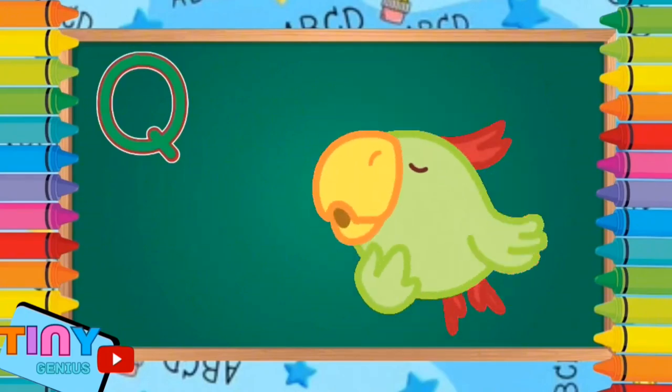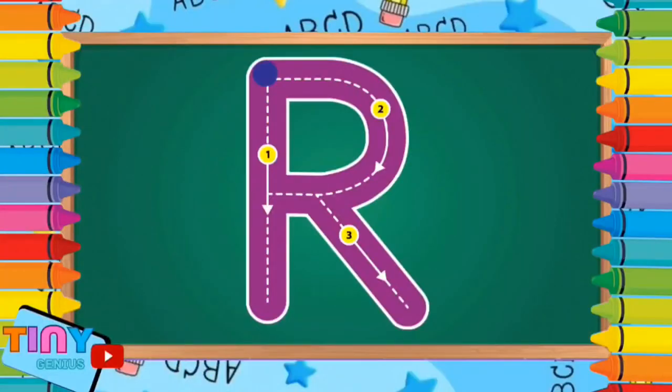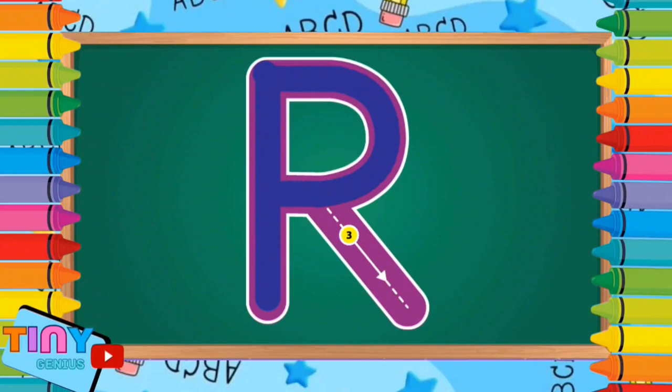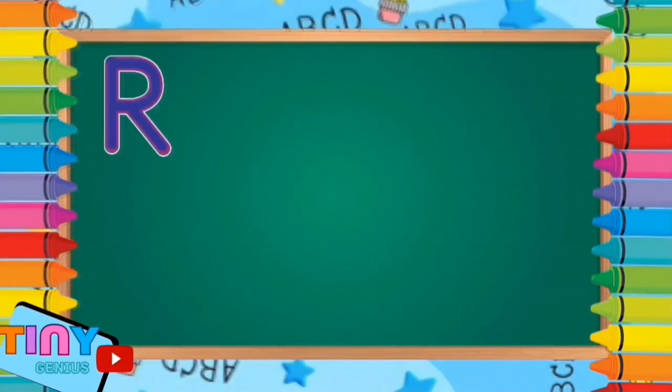Let's jump to the next one, the letter R. Pull down, back to the top, around in, and slant down. R is for rabbit.